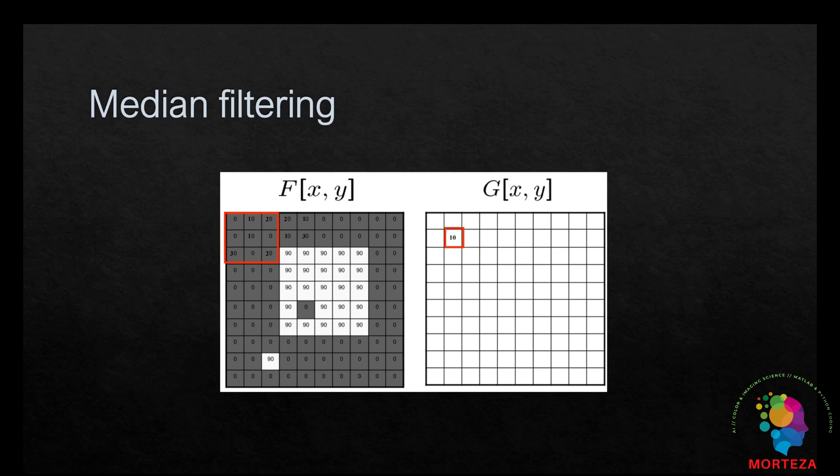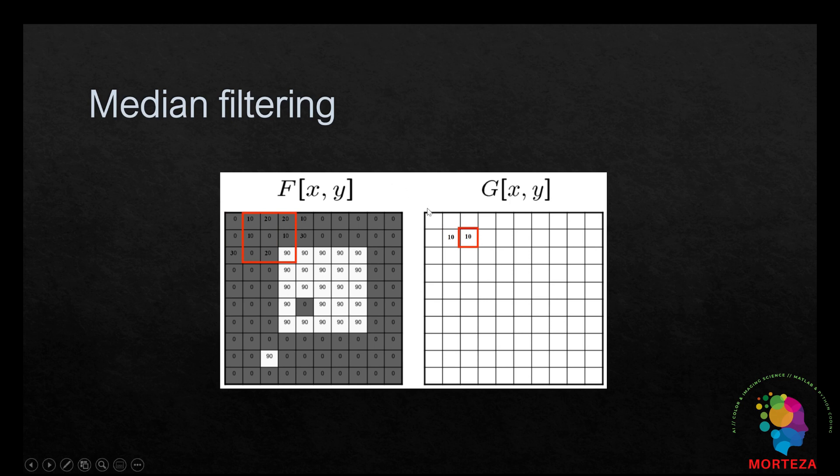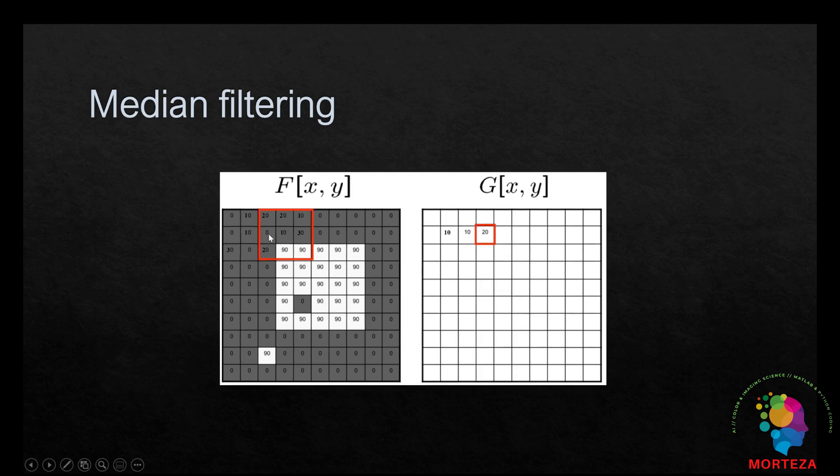So as you can see, one more time, the window moves, and the output here is the median value of the neighboring values around the central point. This is just a reminder how median filter works.